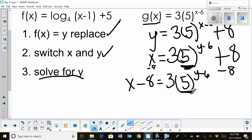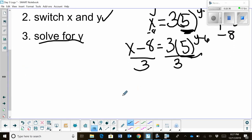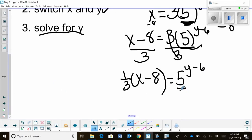Now, is the base isolated? And I hope you're saying no, it's not, because we have a coefficient of three. So we need to divide both sides by three. You could also multiply by one-third. That may be a little cleaner here. So I'm just going to write it as one-third times x minus eight is equal to, and then of course these threes, when we divide it, cancel. So five to the y minus six, just so you can see another way to look at it. Now I've got my base isolated.